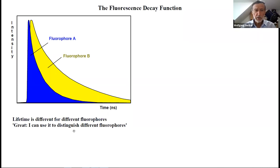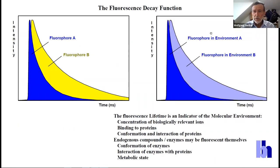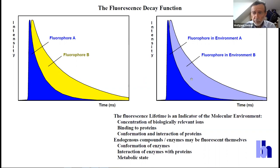Of course you can do this, but it's not the only way to distinguish between fluorophores. From my point of view, it's much easier to distinguish fluorophores by spectral characteristics—just by taking a spectral image with a camera. The really interesting part is that the same fluorophore in different environments has different lifetimes. The reason is the interaction of the excited molecule with its molecular environment, which takes away excited energy. How quickly and how much energy it takes away depends on the molecular environment—and so the fluorescence lifetime allows us to distinguish the same kind of molecule in different molecular environments. It's an indicator of the molecular environment.